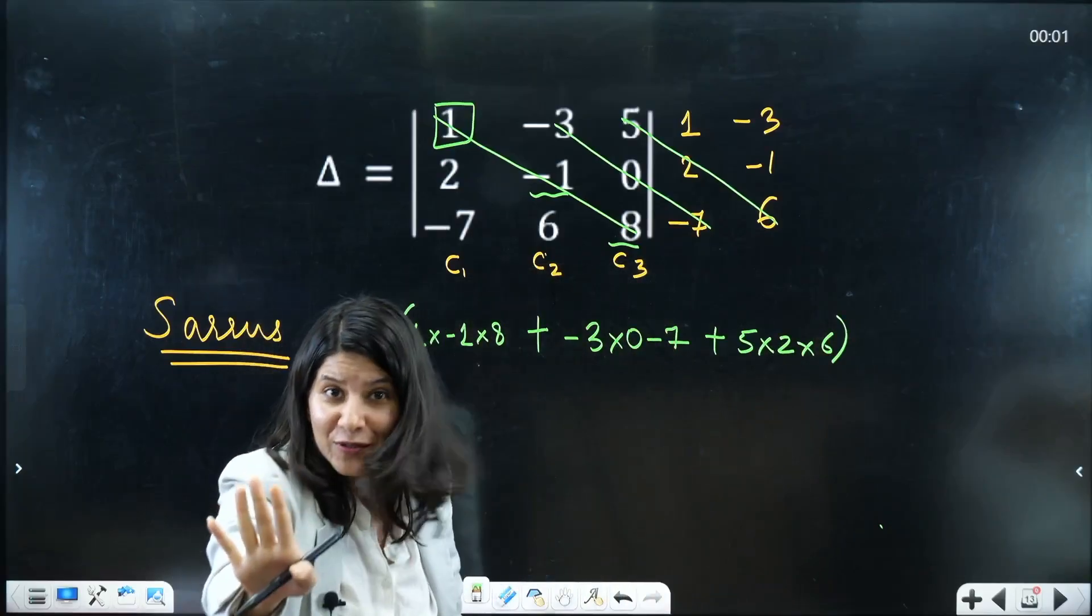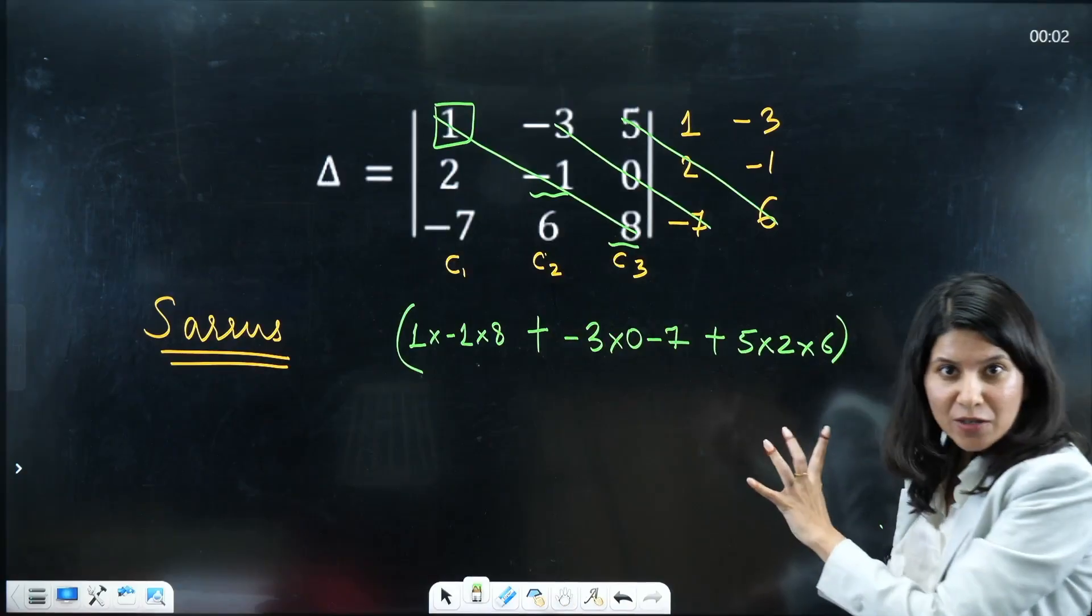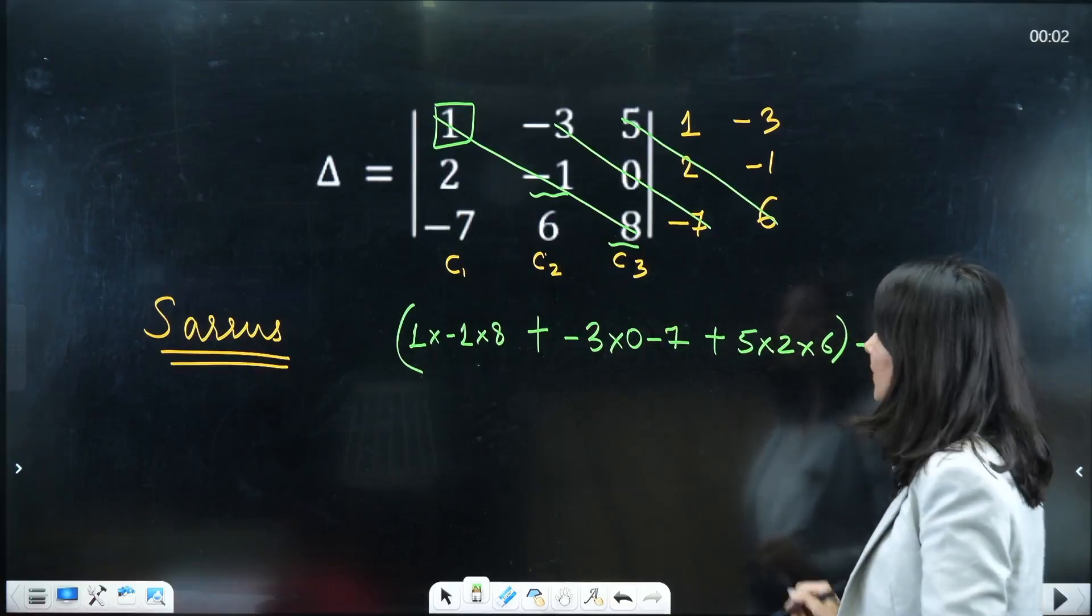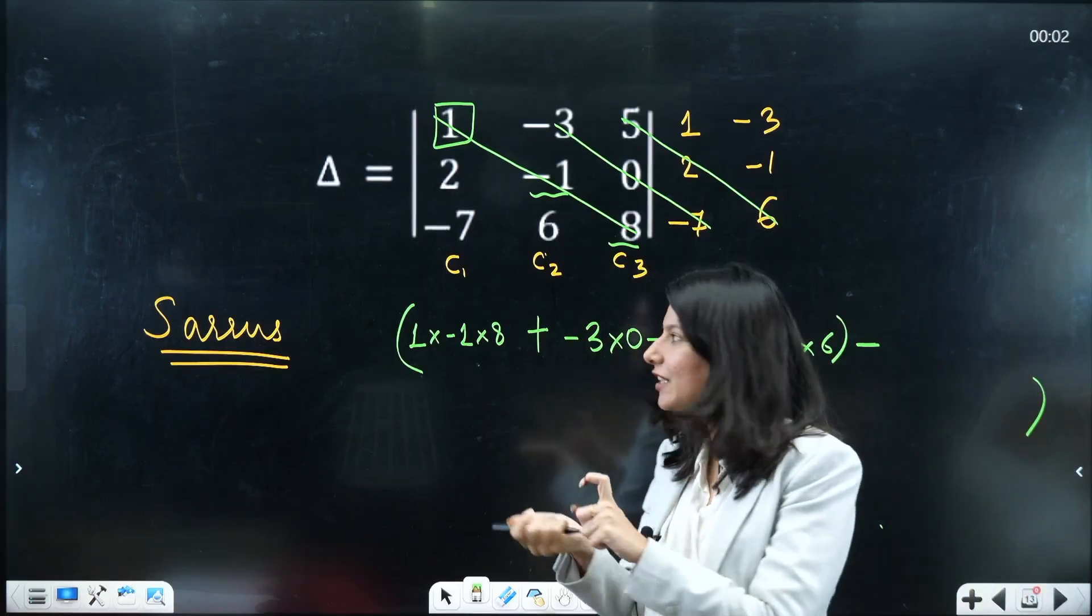Now you don't have to stop. It is not done yet. Another thing you have to do. So this is the first part of it. The second part is you have to apply a negative sign over here and now you have to repeat the same thing but with a little bit different manner.